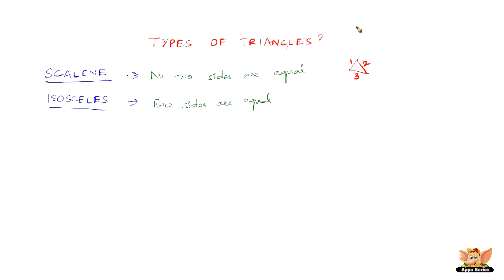For example, we can draw something like this. You can see that these two sides are equal — indicated by these tick marks. Say this side is three and this side is three, while this will be four units, whether that's three centimeters or four centimeters. So two sides are equal here.